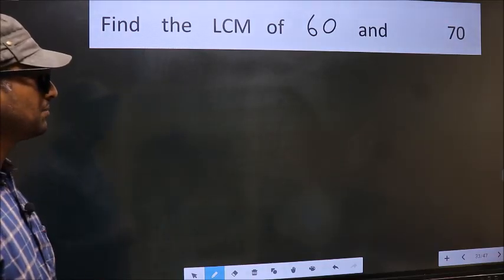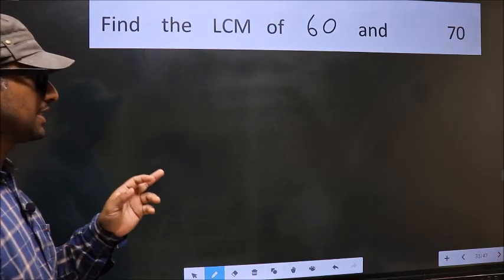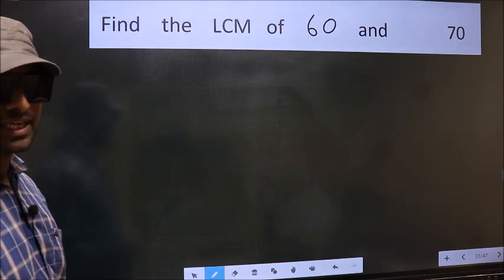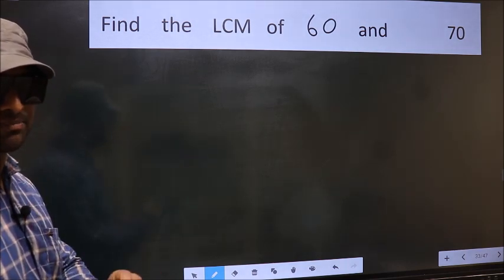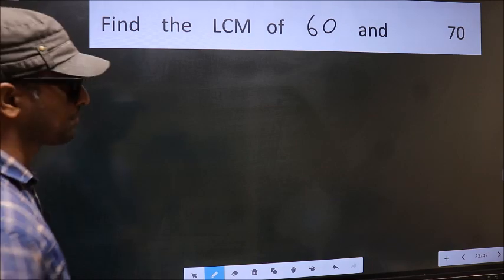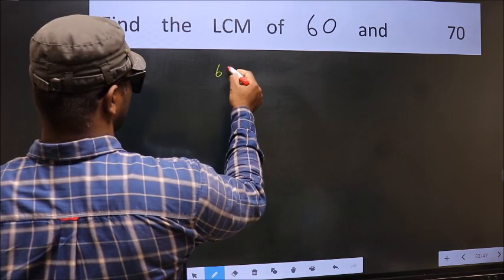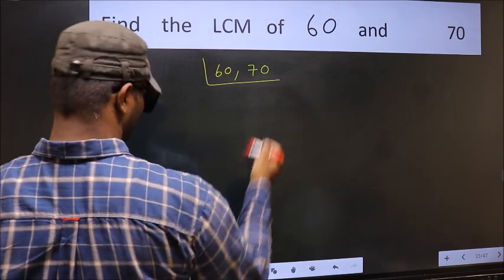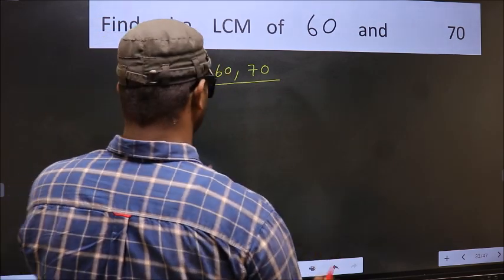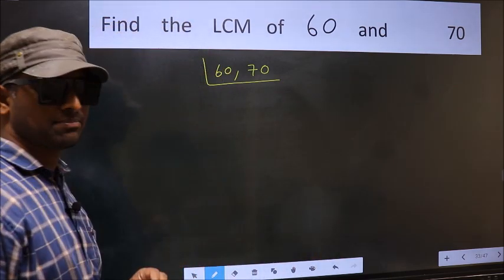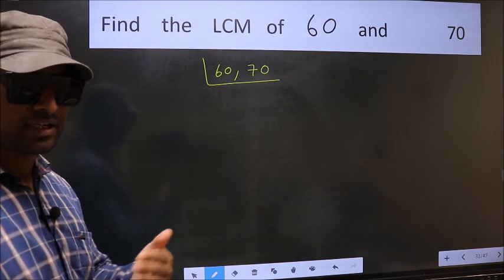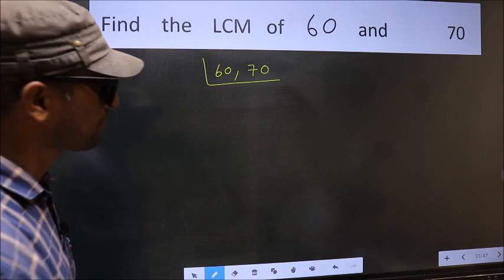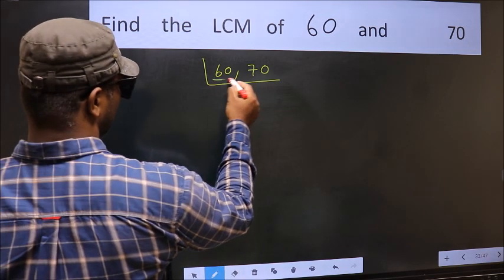Find the LCM of 60 and 70. To find the LCM, first we should frame it in this way: 60 and 70. This is your step 1. Now you should focus on the first number, which is 60 here.